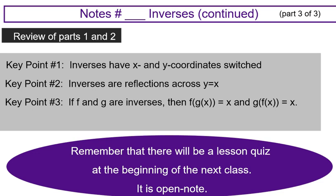Key point number one is inverses have x and y coordinates switched. Key point number two, inverses are reflections across y equals x. Key point number three, if f and g are inverses, then f of g of x equals x and g of f of x equals x.